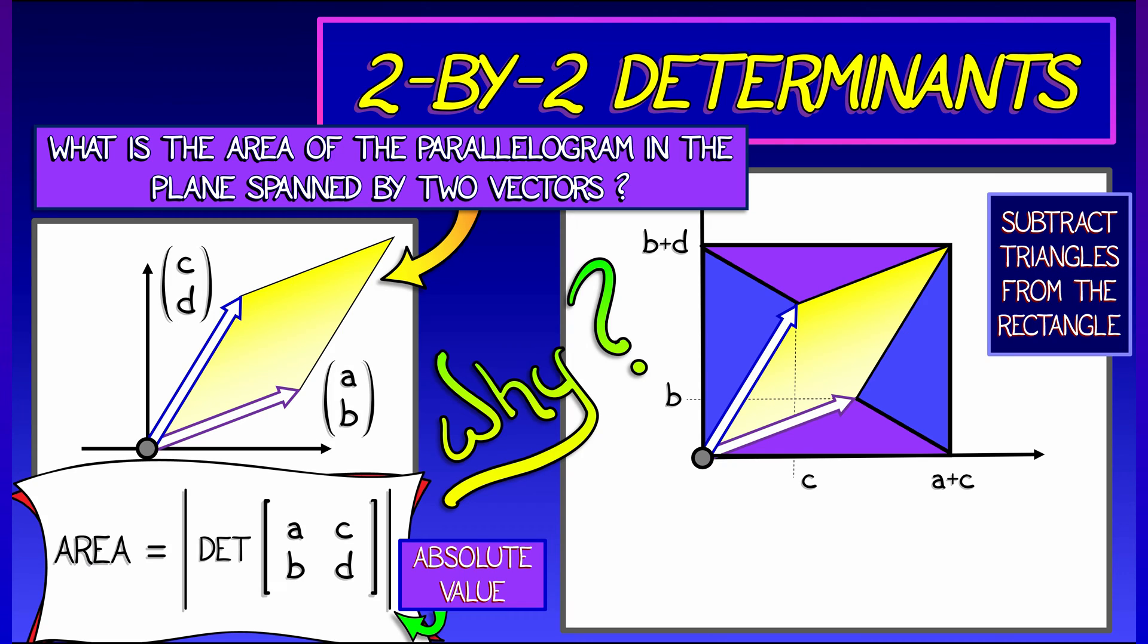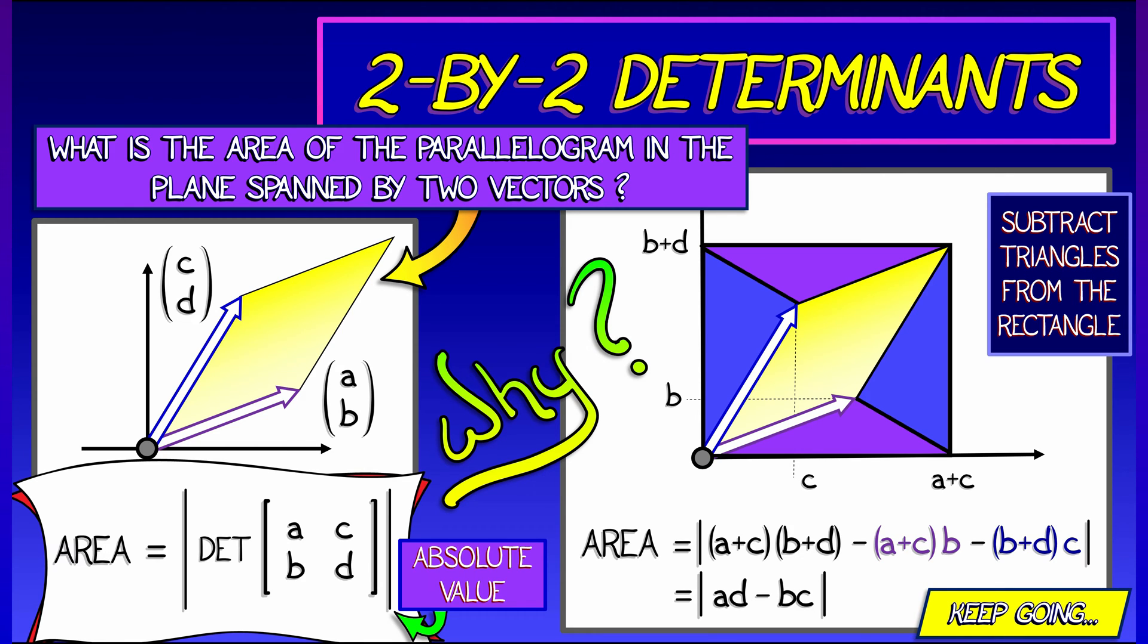Now, if I'm a little bit careful with the coordinates of these vectors, then I have enough information. The area of the rectangle is quantity a plus c times quantity b plus d. I have to subtract off the purple triangles area, and then the blue triangles area, a little bit of algebra, you get ad minus bc. Then pop everything underneath absolute value signs in order to take care of potential minus signs.